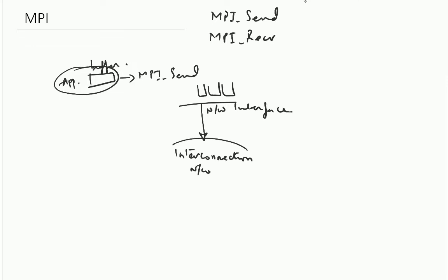There will be these queues; they will keep getting filled up and slowly at the link transmission rate, it will keep putting this data onto the network. The rate at which this queue gets empty is driven by the bandwidth of the link.